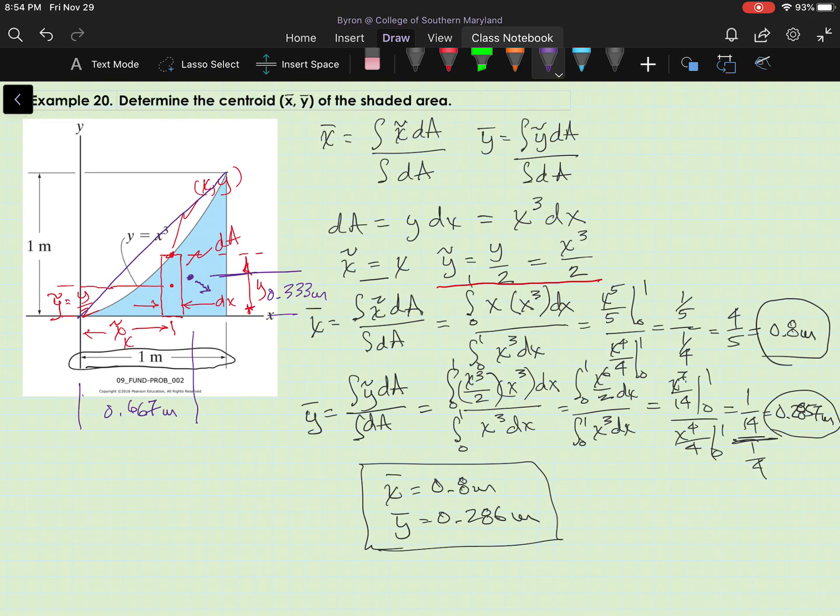So I got x bar equals 0.8. So my actual x bar for the area under y equals x cubed is over here somewhere. Somewhere along x equals 0.8, and y bar is 0.286, which is less than the 0.33. So that makes sense.